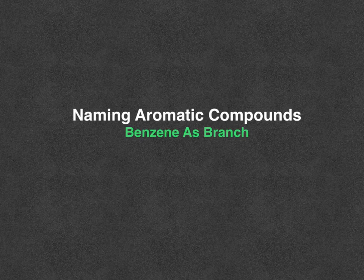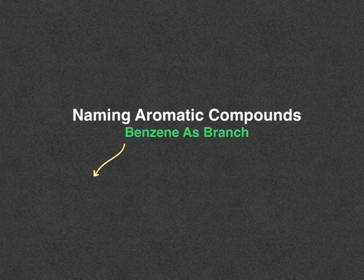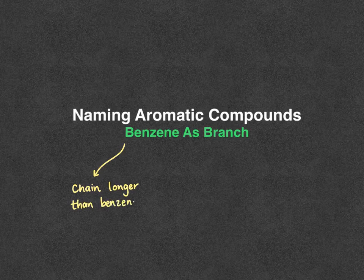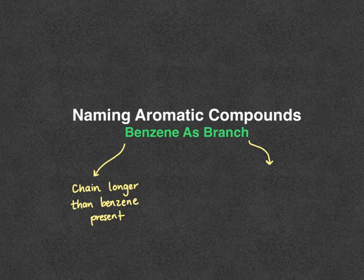In this video we're going to look at some examples of naming aromatic compounds where benzene is a branch off of a chain. This can happen in a couple of scenarios: one is if there is a chain longer than benzene present — so that's more than six carbons — or if there's a chain that has a functional group or another branch.